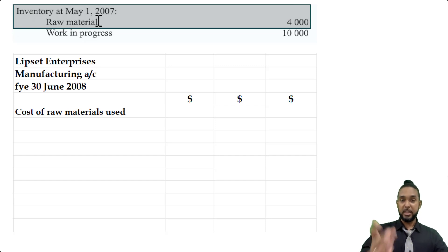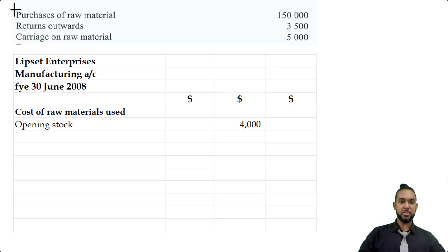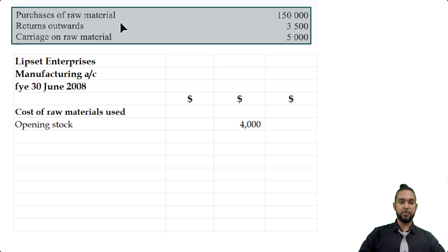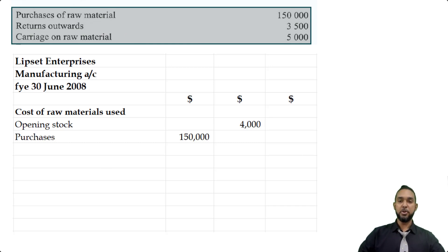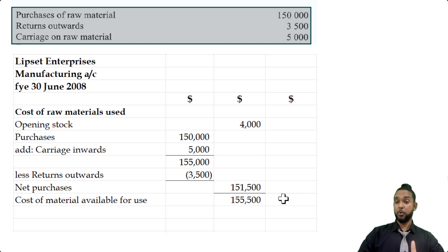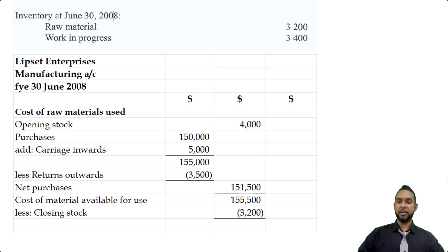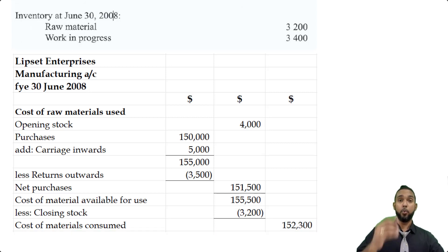We're going to start with the cost of raw materials used. Opening stock of raw materials is $4,000. For purchases, we have purchases of raw material $150,000, carriage $5,000 — giving $155,000 — minus returns of $3,500, giving net purchases of $151,500. Adding that to the opening stock gives us the cost of raw materials available for use. We then subtract the closing stock of raw material — $3,200 — to get the cost of raw materials consumed.